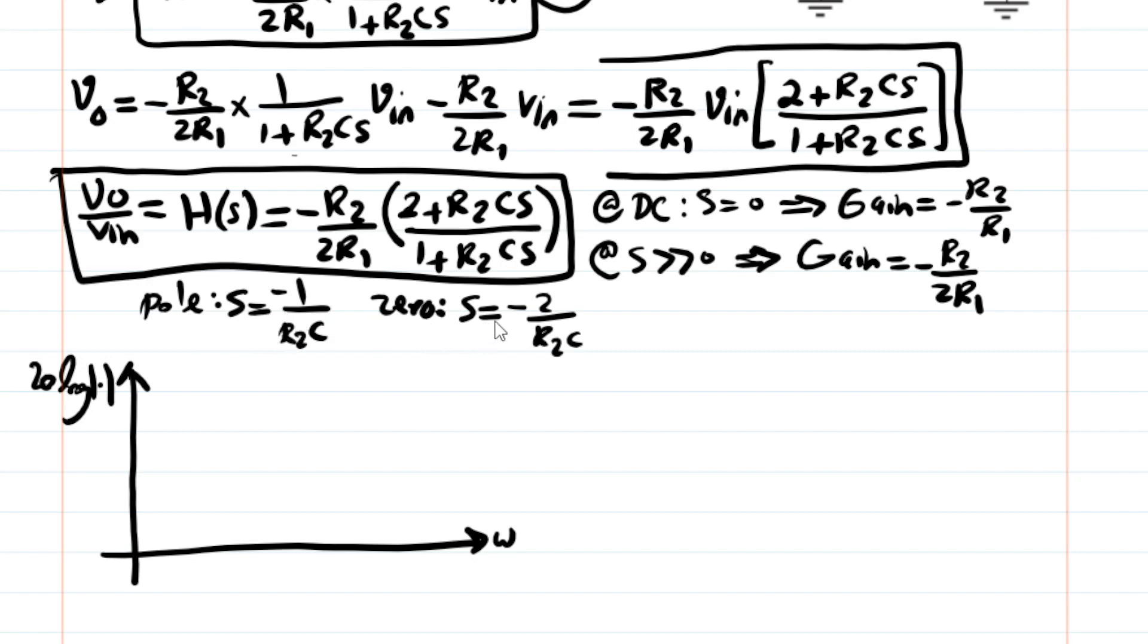And then you know that the pole happens first, and then zero comes at twice the frequency. So when you show it, then you see that first pole, so you have, at DC, you have a gain, which is this gain, so 20 log absolute value of this gain.